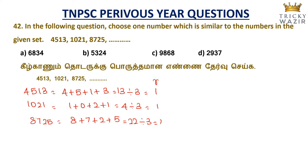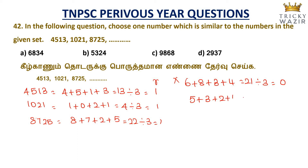The divisibility rule of 3 pattern shows remainder 1 for all numbers in the set. Checking 6834: 6 plus 8 plus 3 plus 4 equals 21; 21 divided by 3 gives remainder 0. Checking 5324: 5 plus 3 plus 2 plus 4 equals 14; 14 divided by 3 gives remainder 2. Checking 9868: 9 plus 8 plus 6 plus 8 equals 31; 31 divided by 3 gives remainder 1.